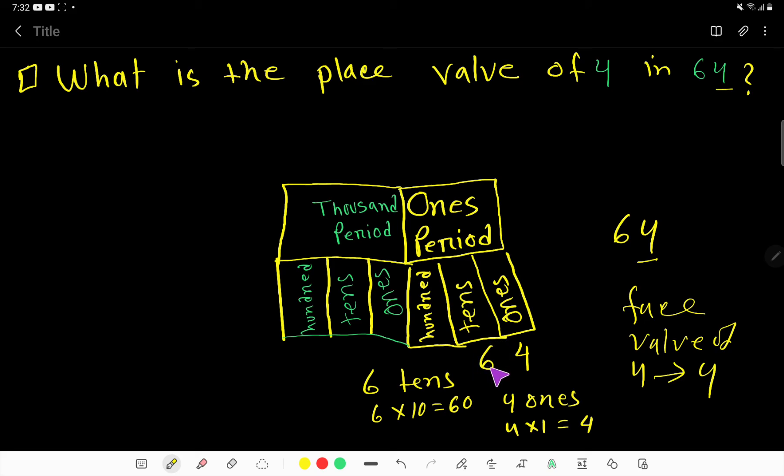So what is the face value of 4 in 64? The answer is 4, since it is situated in the unit place. And what is the face value of 3 in the unit place?